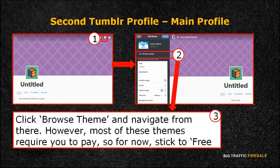Next, edit your second profile page. This serves as your main page to users in Tumblr. Simply click on your avatar; when the right interface pops out, you're directed to your main page. On the top right screen of your page, click on the Edit Appearance icon.